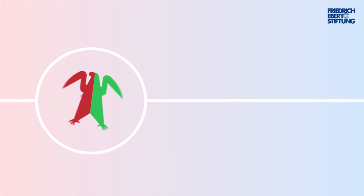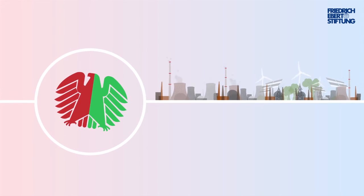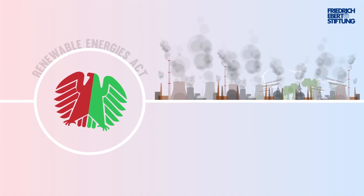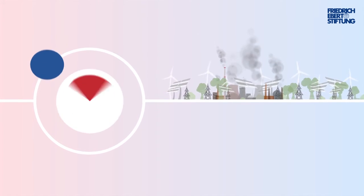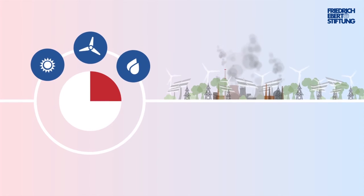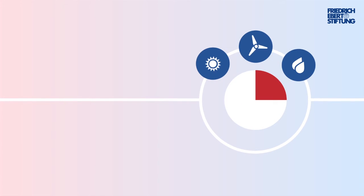But that doesn't mean that we have to start from scratch. In 2000, the so-called Red-Green Coalition government passed the Renewable Energies Act. Today, more than a quarter of our energy supply now comes from renewable sources. That's the good news.